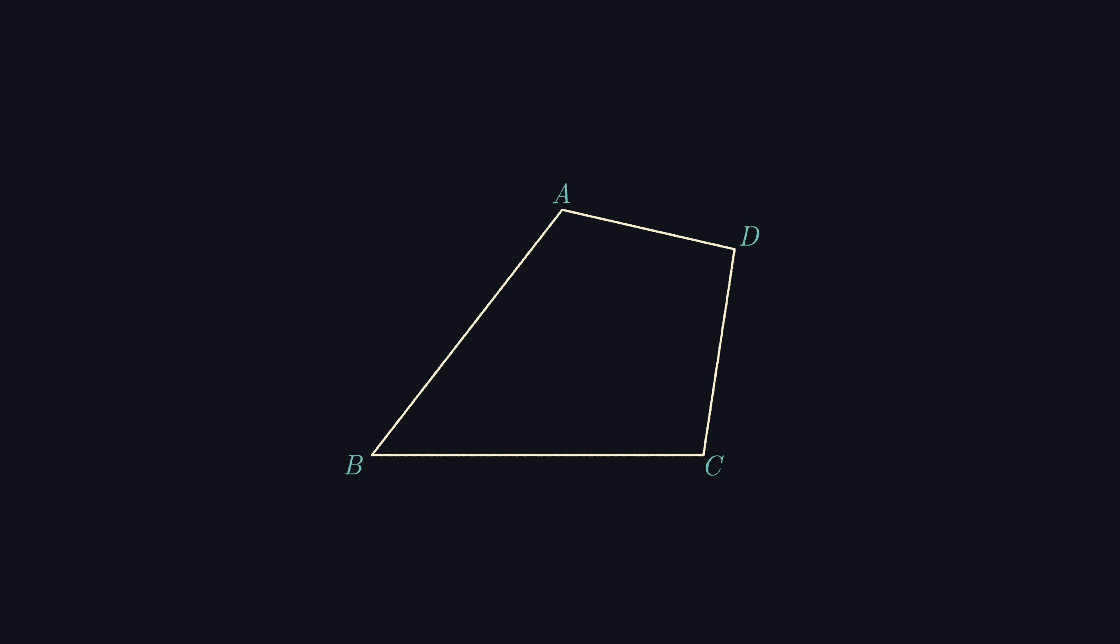Now, all that remains is to check when our original quadrilateral ABCD was not tangential, then can we always split it up into a triangle and a tangential quadrilateral? Before I show you the final solution, pause and try to think this through yourself.